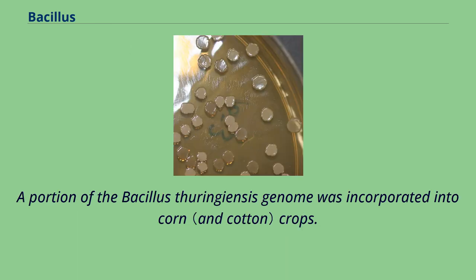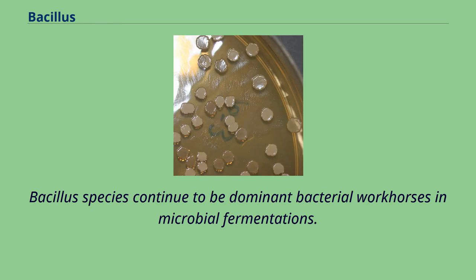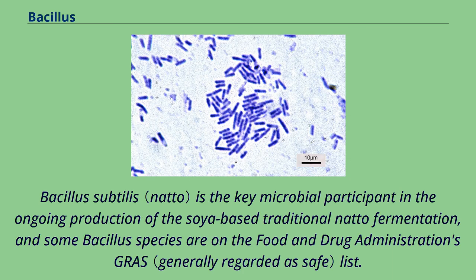A portion of the Bacillus thuringiensis genome was incorporated into corn crops, and the resulting GMOs are resistant to some insect pests. Bacillus species continue to be dominant bacterial workhorses in microbial fermentations. Bacillus subtilis is the key microbial participant in the ongoing production of the soya-based traditional natto fermentation, and some Bacillus species are on the Food and Drug Administration's GRAS list.